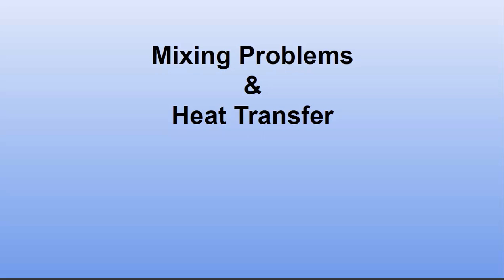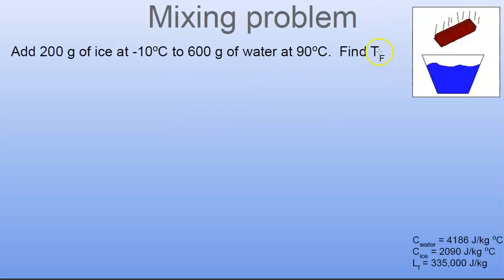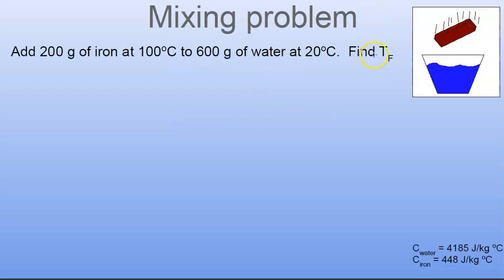Here's a little mixing problem. We're going to take a hot bar of iron and throw it into some cold water. We have 200 grams of iron at 100 degrees Celsius and 600 grams of water at 20 degrees Celsius, and we'd like to find the final temperature they arrive at.